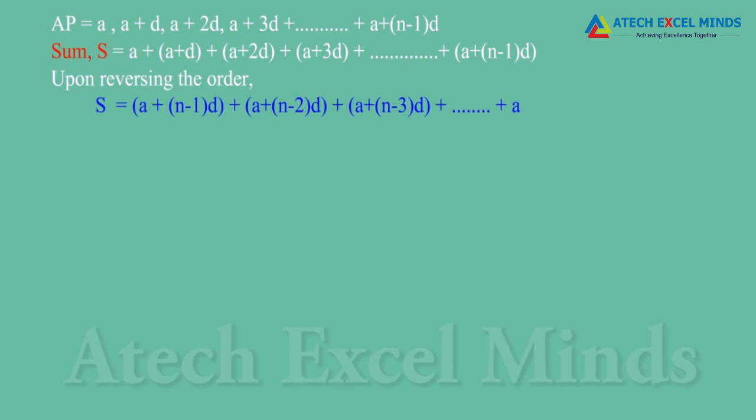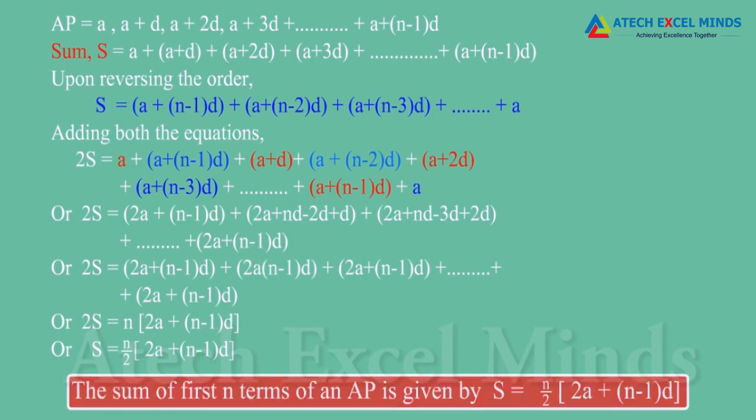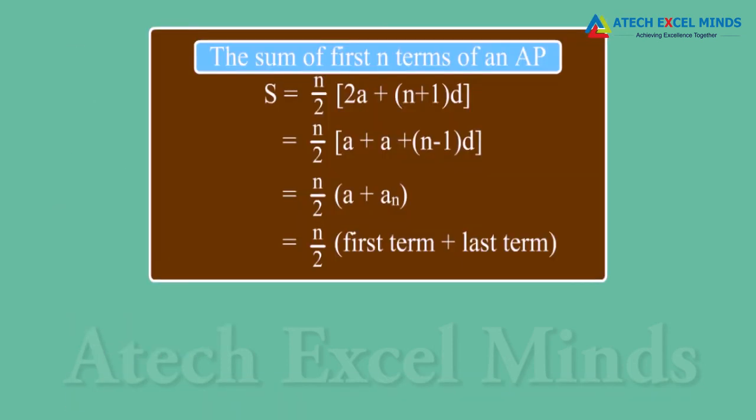Upon reversing the order, this is what we get. Adding both the equations and simplifying, we get S is equal to n upon 2 multiplied by 2A plus (n minus 1) into D. The sum of first n terms of an AP can also be written as n upon 2 multiplied by sum of the first term and last term.